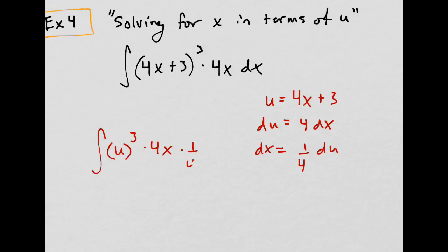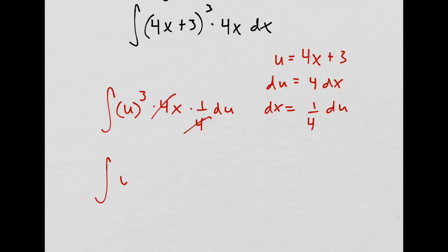Well, dx is just 1 fourth du. Okay. So that cancels. So I get u cubed times x du. What the heck? I can't have this x in there. I can't have u's and x's. I need to figure out what the heck to do.